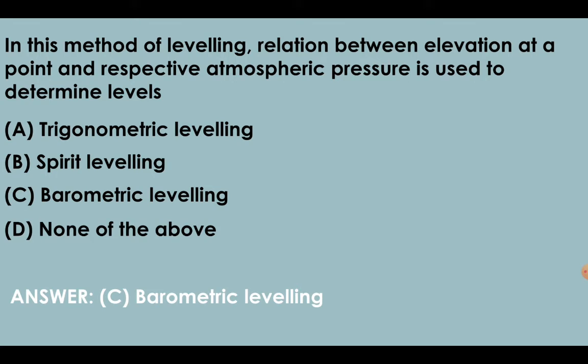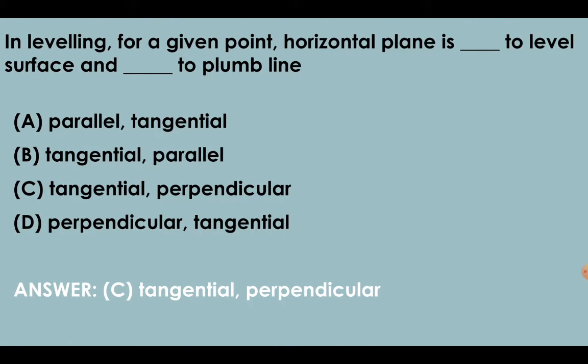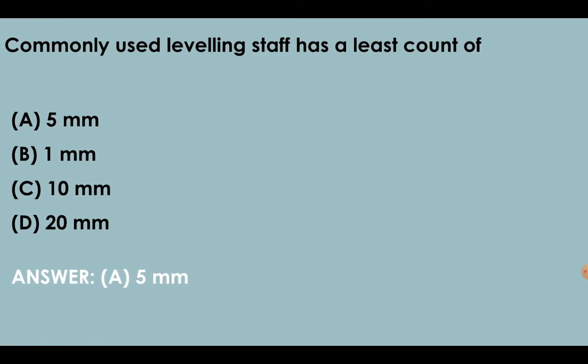In barometric leveling method, relation between elevation at a point and respective atmospheric pressure is used to determine levels. In leveling, for a given point, horizontal plane is tangential to level surface and perpendicular to plumb line. Commonly used leveling staff has a least count of 5 mm.